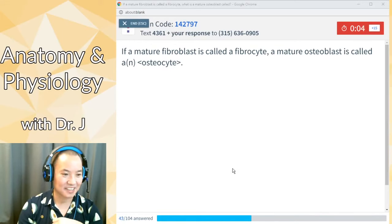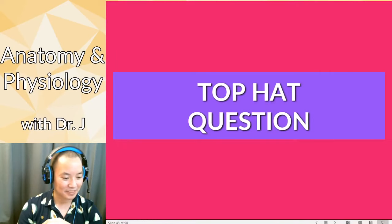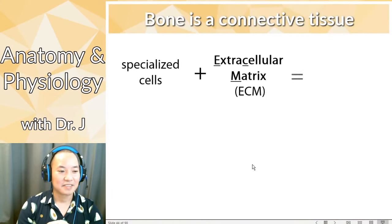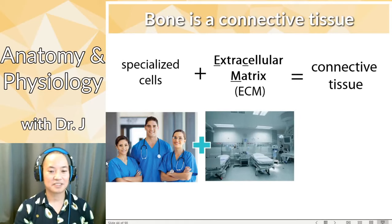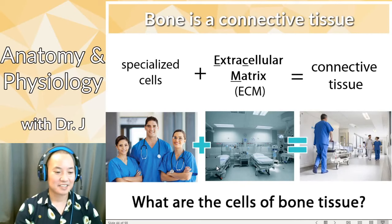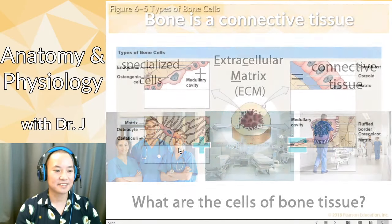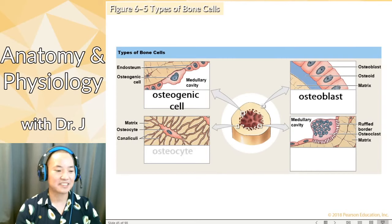So what are the cells of bone tissue? There are actually four broad categories. You have osteogenic cells, osteoblasts, osteocytes, and osteoclasts. You have to be very careful — they all start with 'osteo,' meaning bone, but they're very different. Especially osteocyte and osteoclast start with the same six letters, so don't get them mixed up.